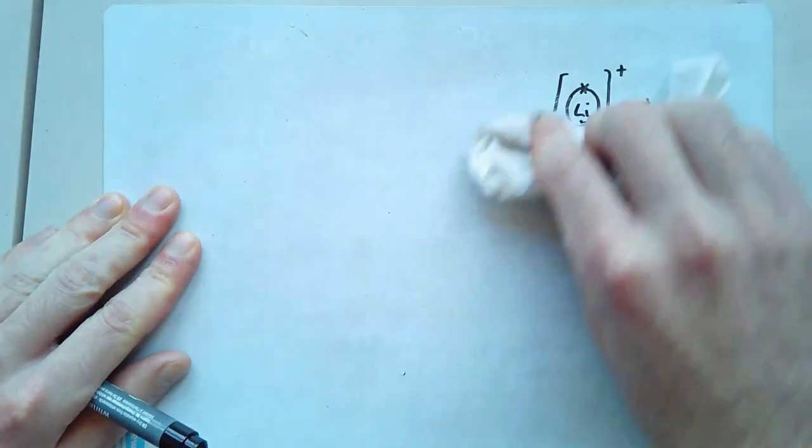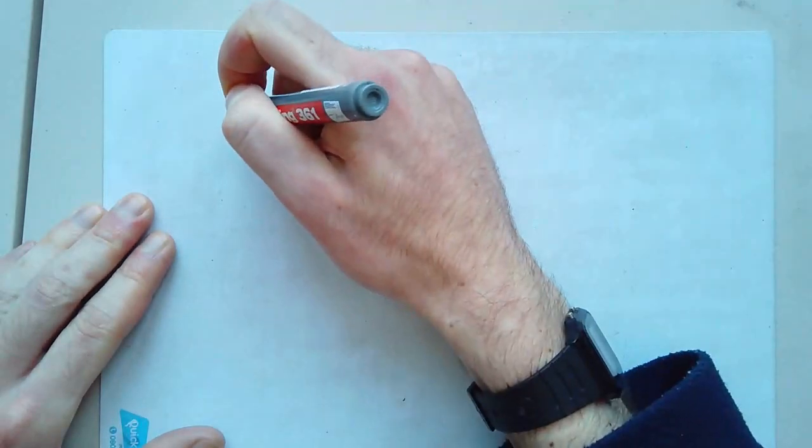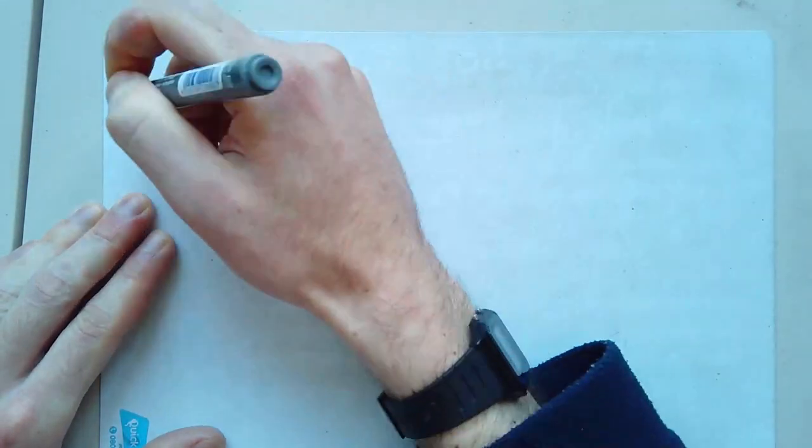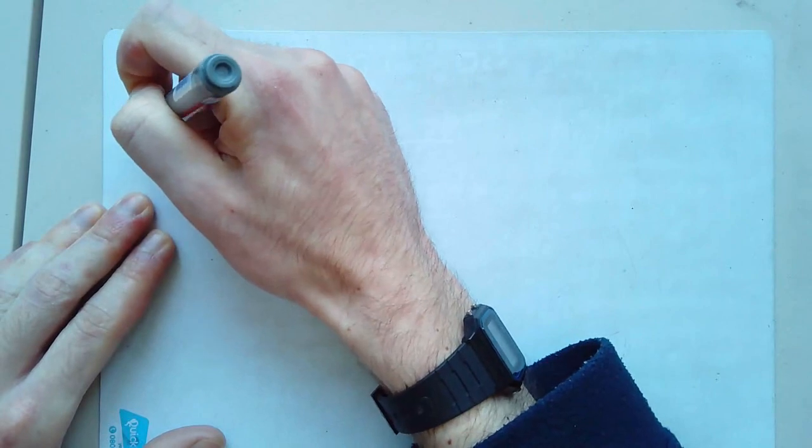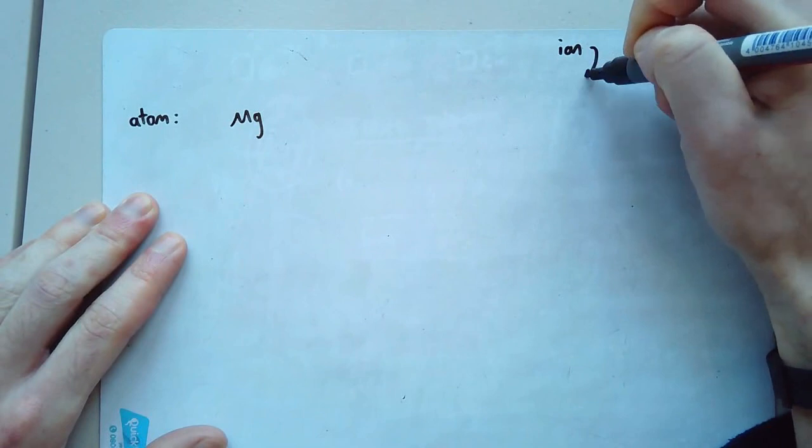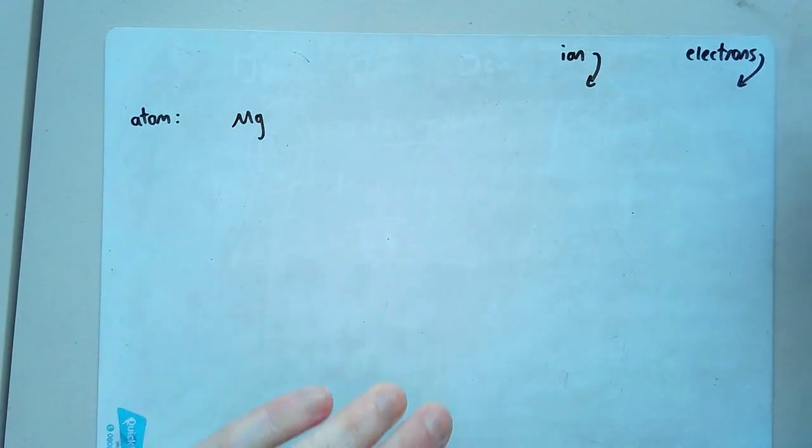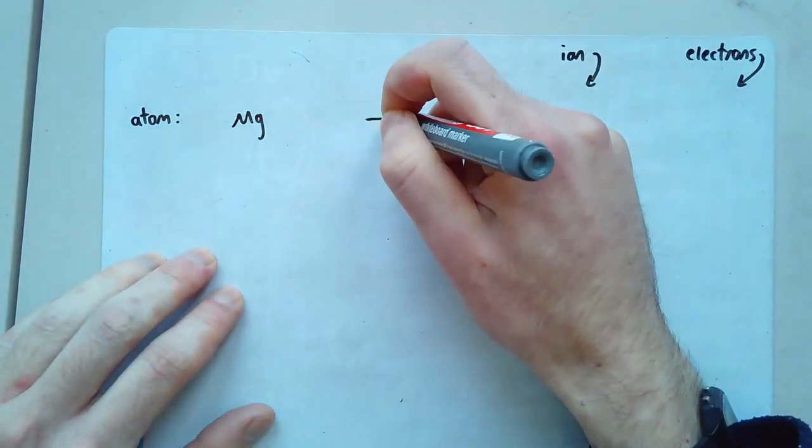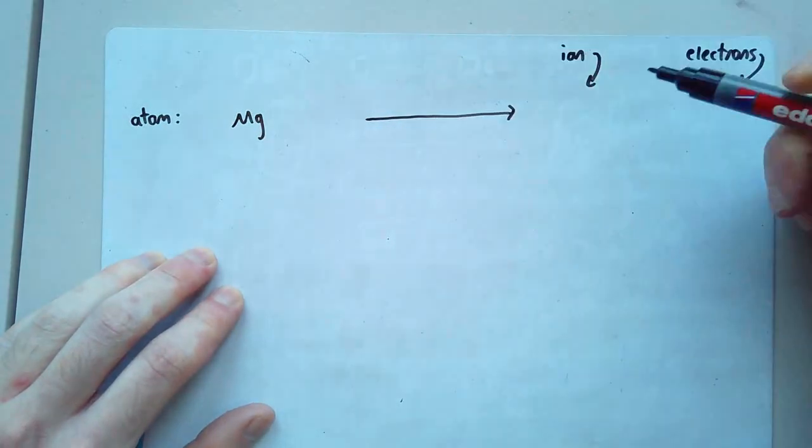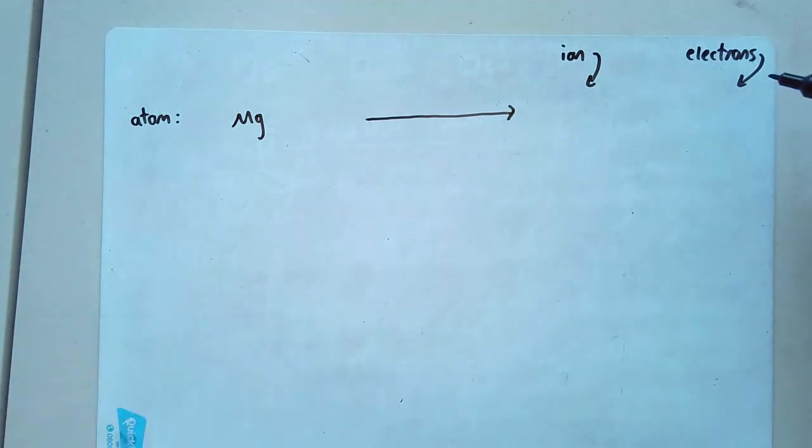What I'd like you to do is have a go for yourself doing that for magnesium. So first draw the atom that will go there. Then you do the ion over here. And I want to see the electrons over there. So draw your atom here. You're going to have your arrow. You're going to have an ion over here. And you're going to have your electrons over there. Do that for yourselves. Pause the tape. And then when you're ready, press play again.